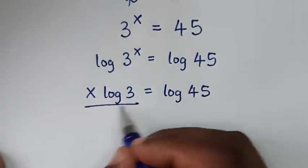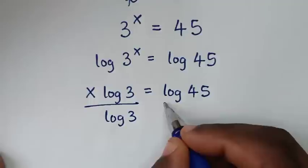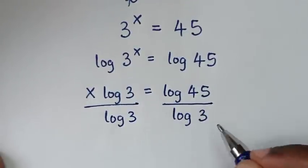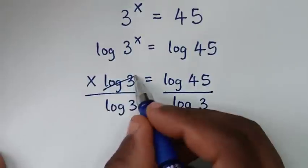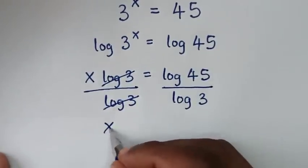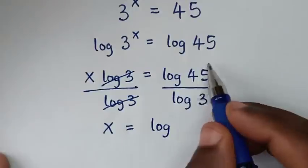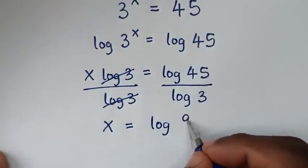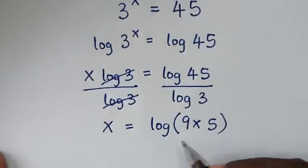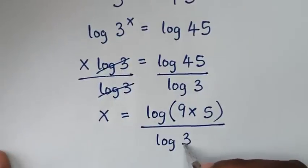We will divide by log of 3 on both sides. So log of 3 will cancel log of 3, and it will be x is equal to log of 45. Log of 45 is the same as log of 9 times 5, over log of 3.